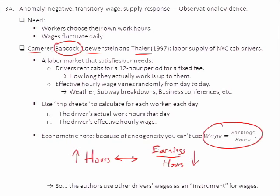So what they use is: instead of looking at the relationship between how many hours you worked and your effective wage, they look at the relationship between the number of hours you worked and the average effective wage of all the other drivers in your fleet that day. So on a high-wage day, their wages are going up too, but their measurement error isn't affecting your data. What do they find? Not surprisingly, they find that hours are negatively related to wages — the wage elasticity of labor supply at the daily level is in fact negative. The daily labor supply curve is downward sloping.